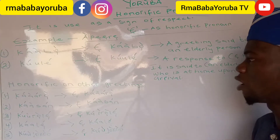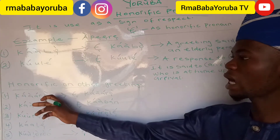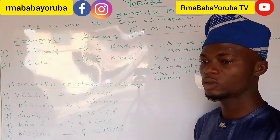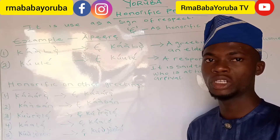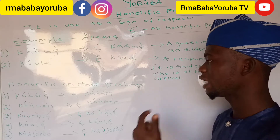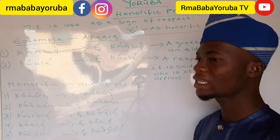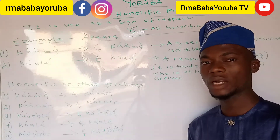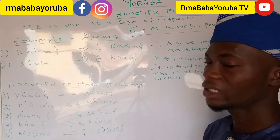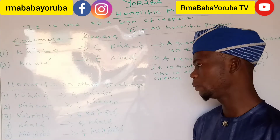Let's look at some other honorific pronouns in greetings. 'Kaaro' means good morning and is said to a mate or to younger ones. But to an elderly person, it is 'e kaaro,' which means good morning. 'E kaasan' means good afternoon to an elderly person. 'E kuule' refers to early evening for an elderly person.